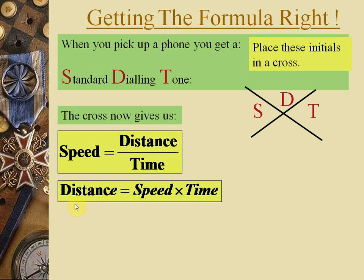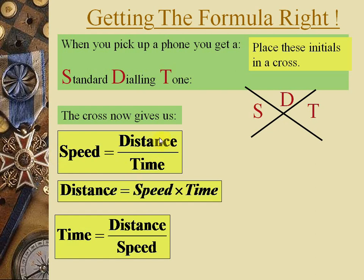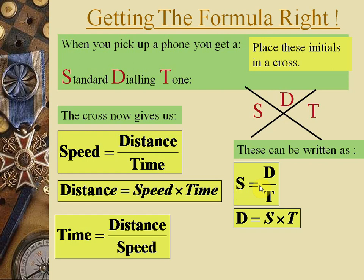When calculating distance: Distance = Speed × Time. When calculating time: Time = Distance ÷ Speed. In short form: S = D/T, D = S × T, and T = D/S. These are the three variations of the speed-distance-time formula.